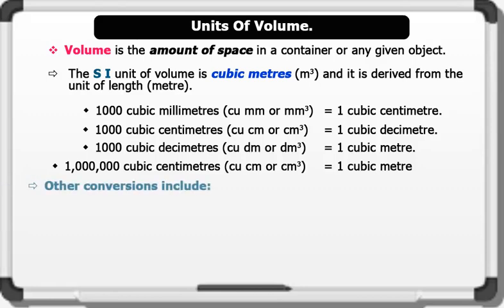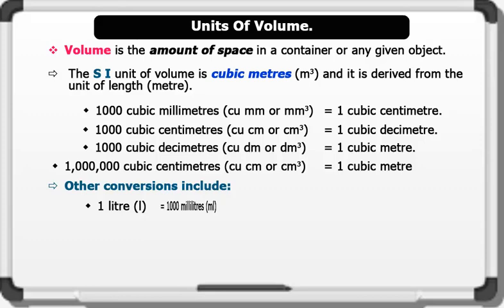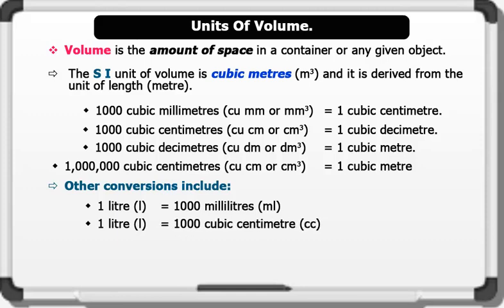Other conversions include: 1 liter equals 1000 milliliters; 1 liter equals 1000 cubic centimeters. Note that the formula for finding the volume of any given object equals length times width times height. Now let's see some calculations involving estimation of volume.